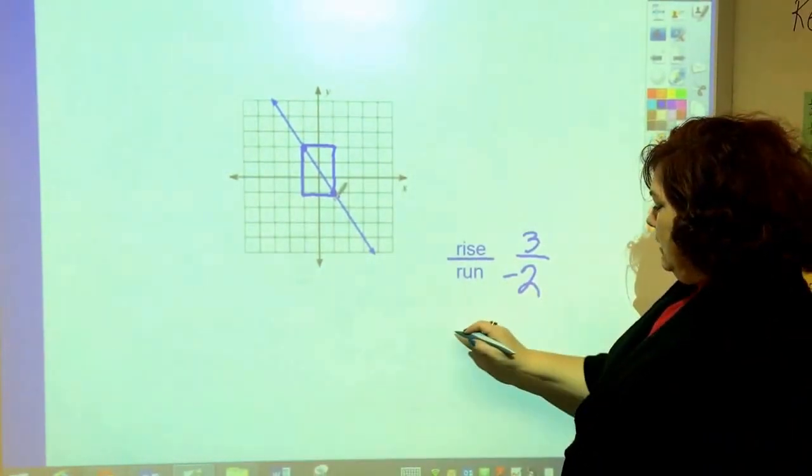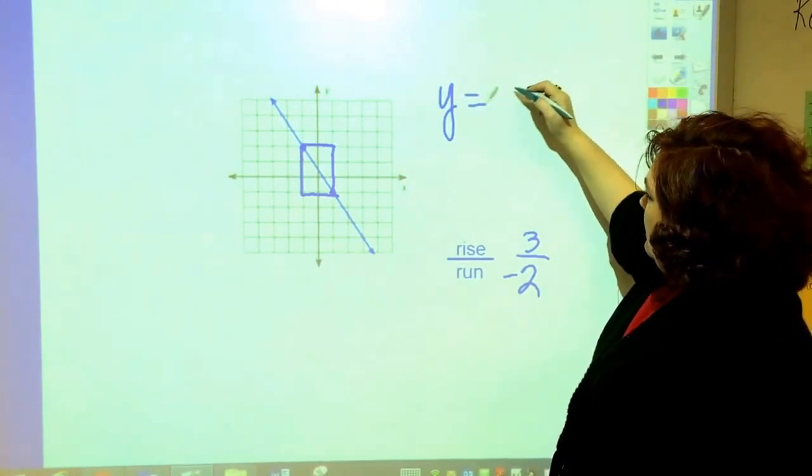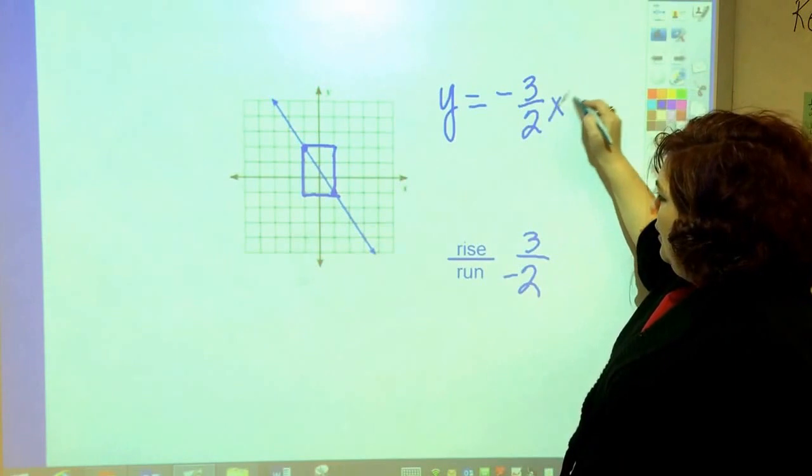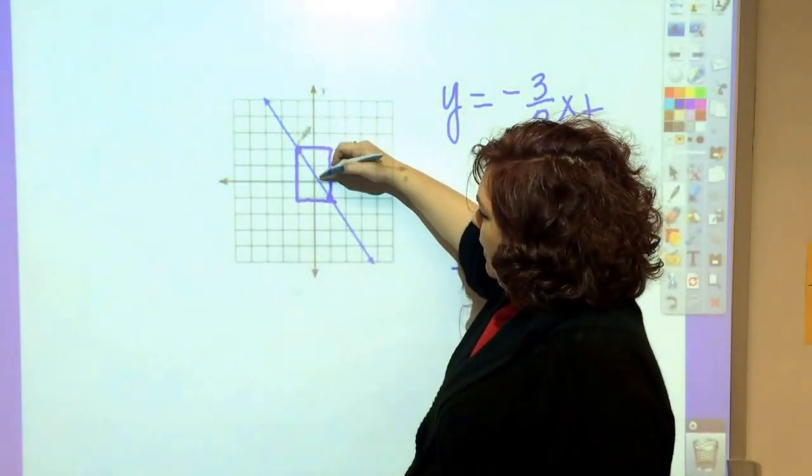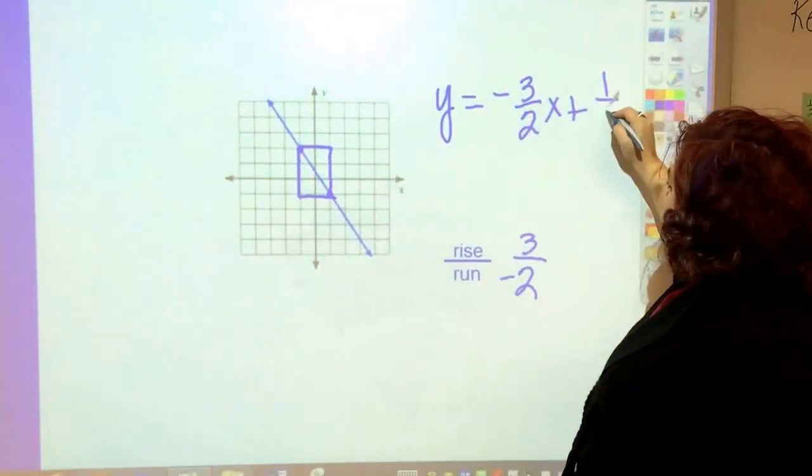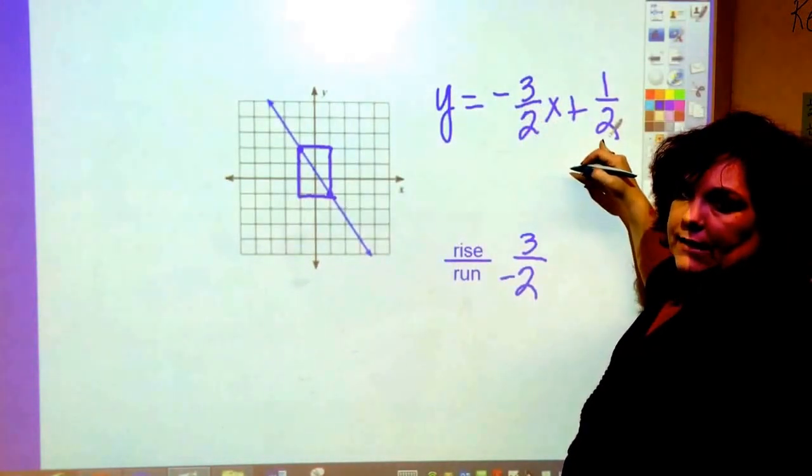So this is y equals negative 3 halves x plus where y crosses the – I mean where the line crosses the y axis. That's at about half. So negative 3 halves x plus 1 half.